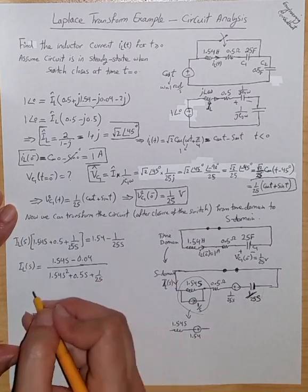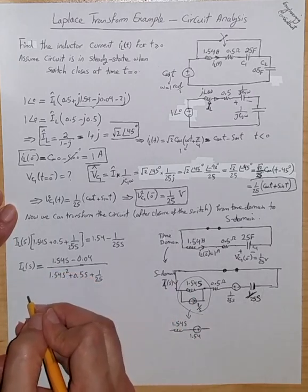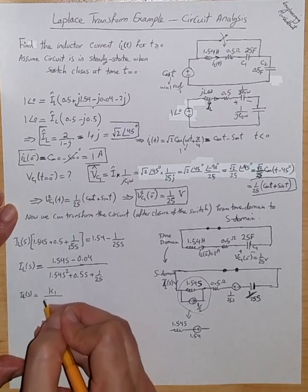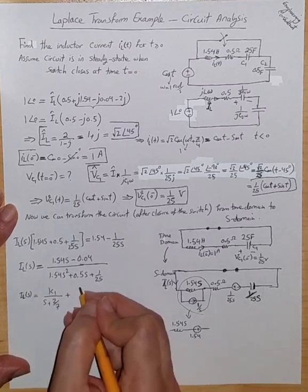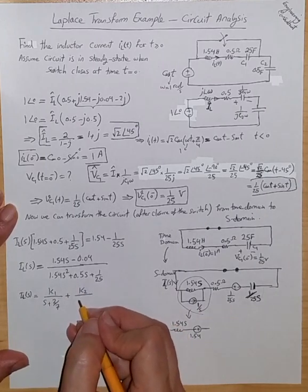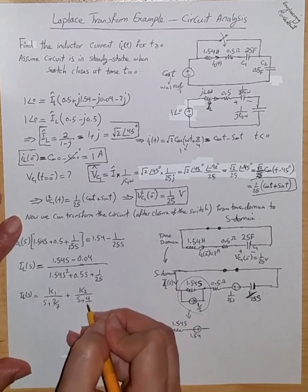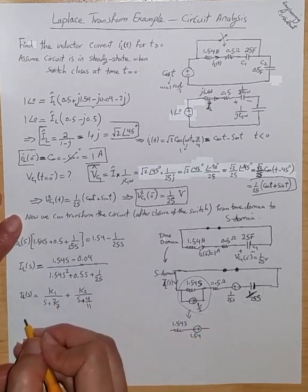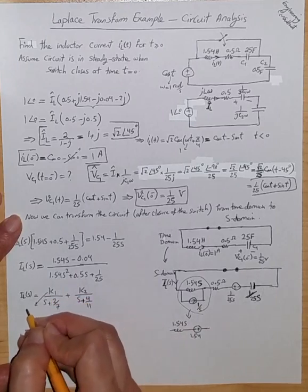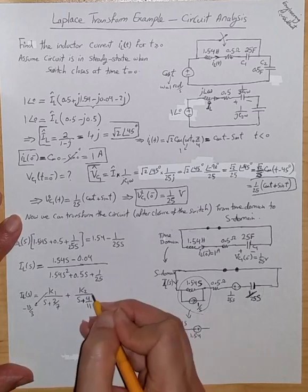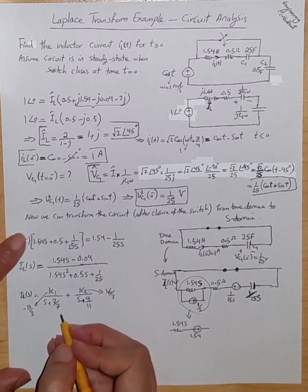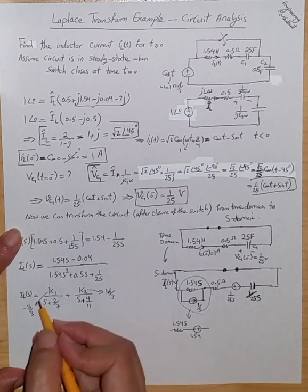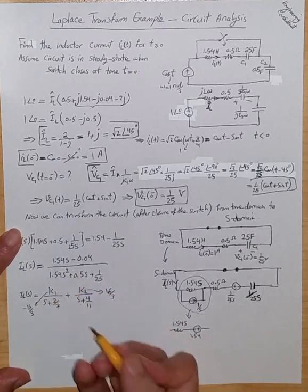Using partial fraction expansion, IL(S) equals K1/(S + 2/7) plus K2/(S + 4/11). Solving for K1 and K2, we find K1 = −13/3 and K2 = 16/3. Substituting K1 and K2 back verifies the expression matches the original.